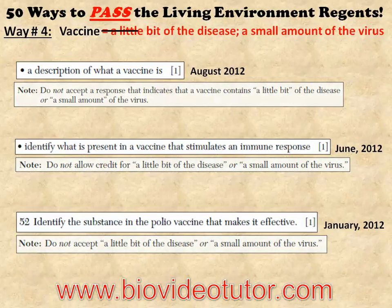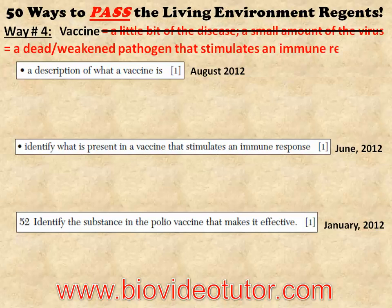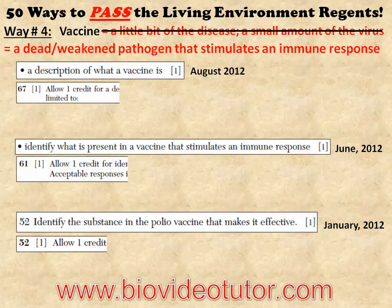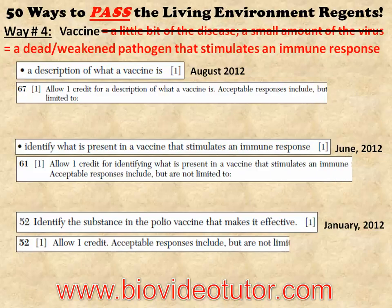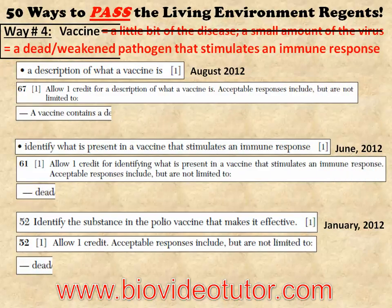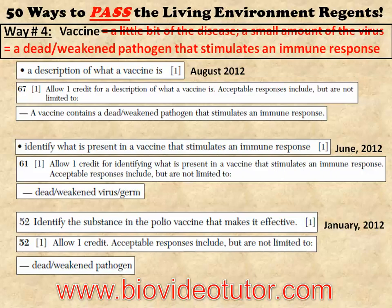So, what should you write instead? How about a dead or weakened pathogen that stimulates an immune response? That was pretty much the number one answer listed in those same answer keys. So, make sure to specify the words dead or weakened pathogen in your answer when describing what a vaccine is.